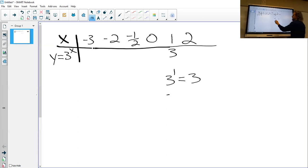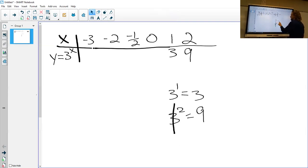If we do 3 to the second power, well, 3 squared is just 9. So that's not too bad. Okay, then we get this slightly more interesting case. What about 3 to the 0 power?